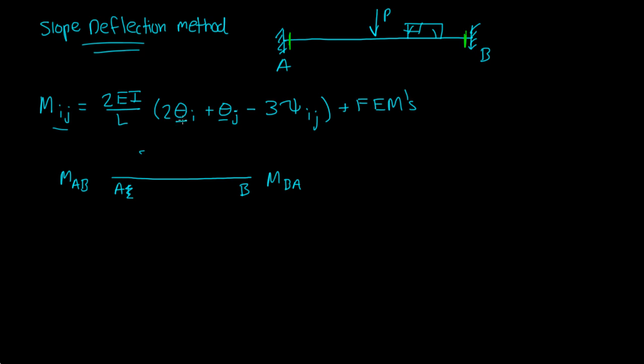And these are generally, the thetas and the psis here are what we don't know. But we can figure out what these are to solve for the moments at the ends of these members. These moments later on will give us the reactions at A and B or whatever support you're looking at.